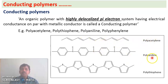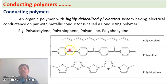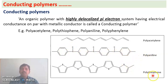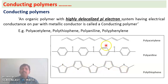Another example is polyaniline, where the repeating unit is C6H5–NH, and in polyaniline we have many such repeating units. Another example is polythiophene, which contains a sulfur atom in its ring structure. All these are examples of conducting polymers.